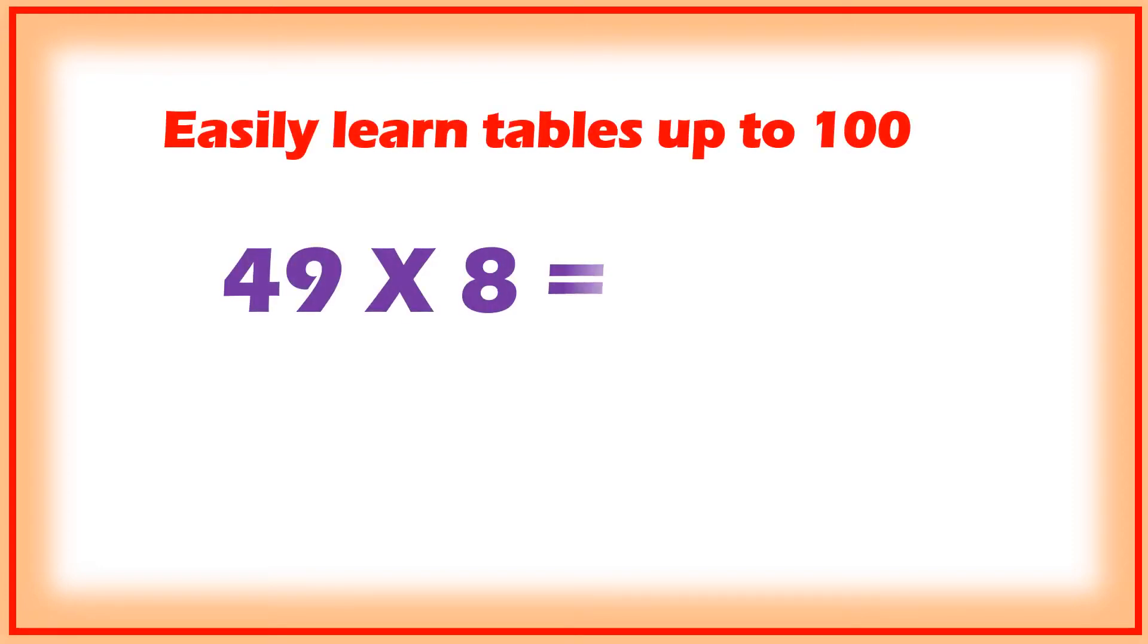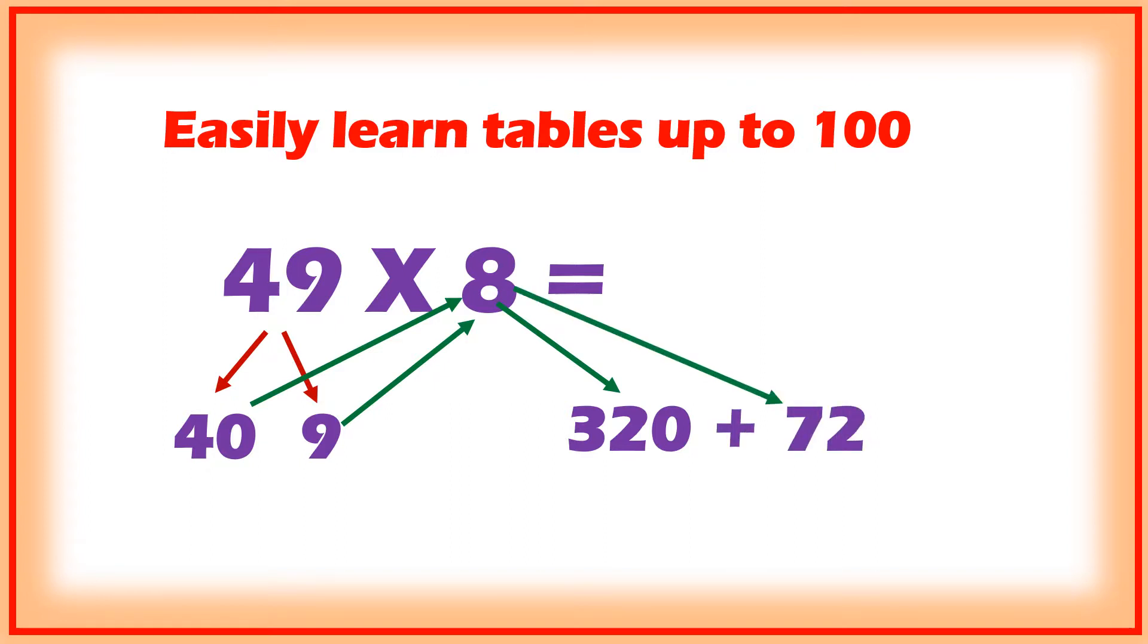Let me try another example: 49 into 8. 49 is separated or distributed into two parts - that is 40 and 9. 4 into 8 is equal to 32, that means 320, plus 9 into 8 is equal to 72. If you add 320 plus 72, 392 is the answer.